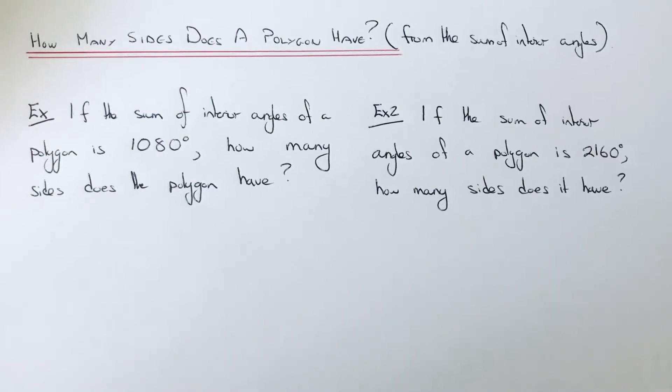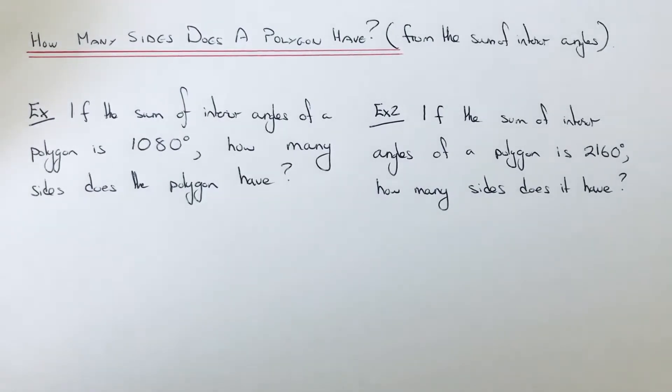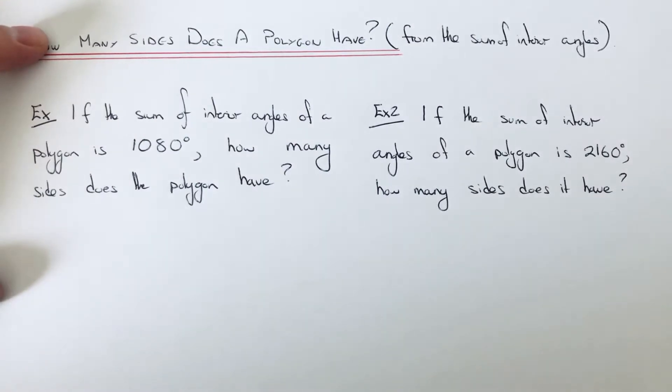Hi guys, welcome back. This is Maths 3000. Today I'm going to show you how to work out how many sides a polygon has if you're given the sum of interior angles.